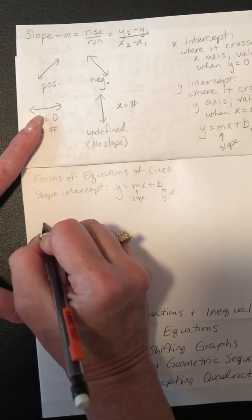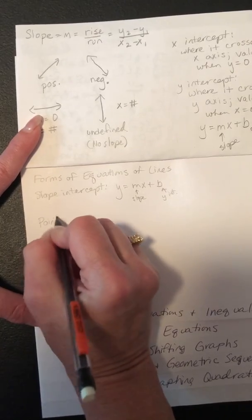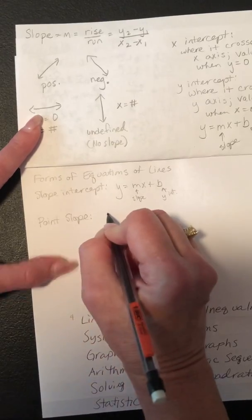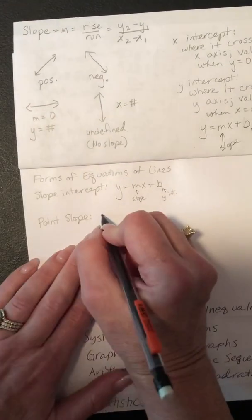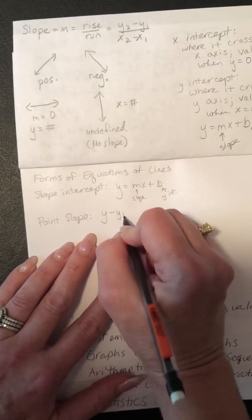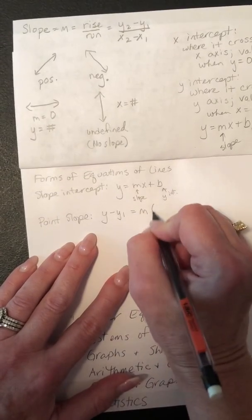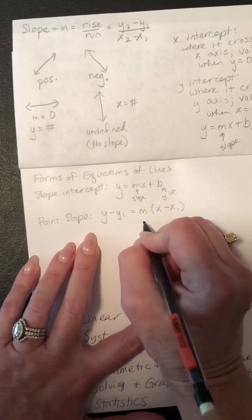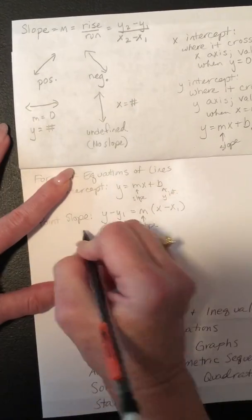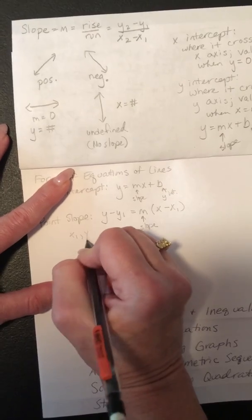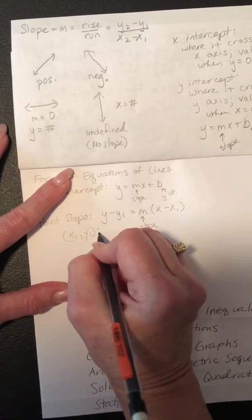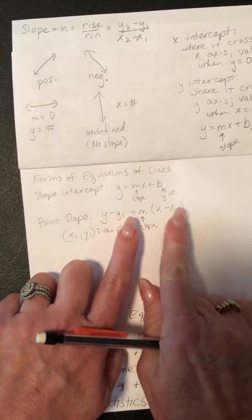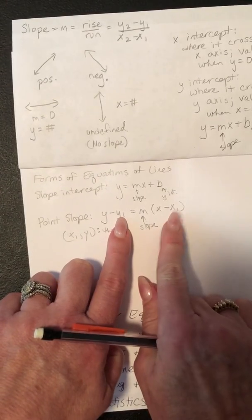The one that you could use all the time, though, is point slope. It's the one that's a little bit more complicated, but it works all the time, except in vertical lines. But y minus y1 equals m times the quantity of x minus x1, where m is still the slope, and x1 comma y1 is the point. You don't plug in for x and y, you plug in for x1 and y1 right there.